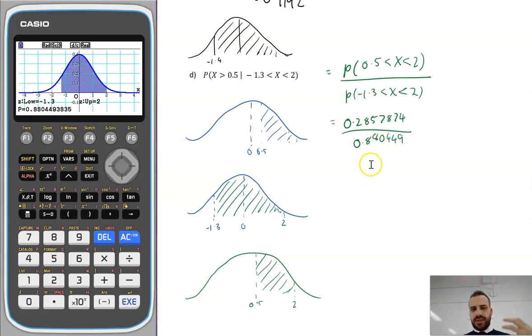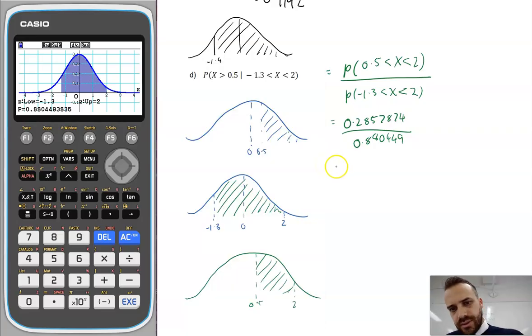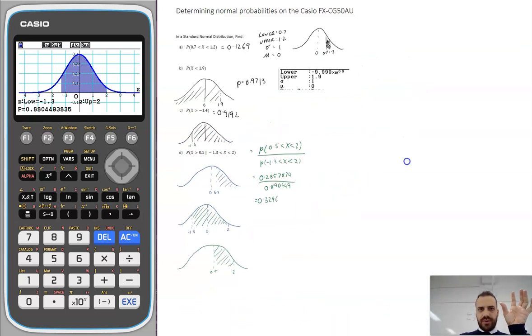Now if I type those two numbers into my calculator, I'll get an answer. I've got my second calculator out here, and I've got 0.3246. And that is the answer to that question there.